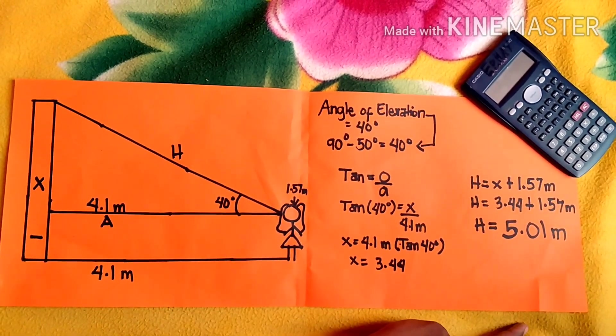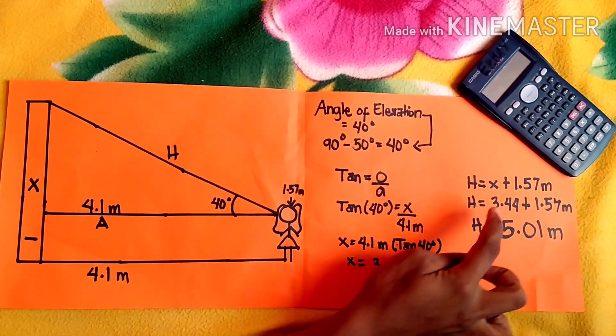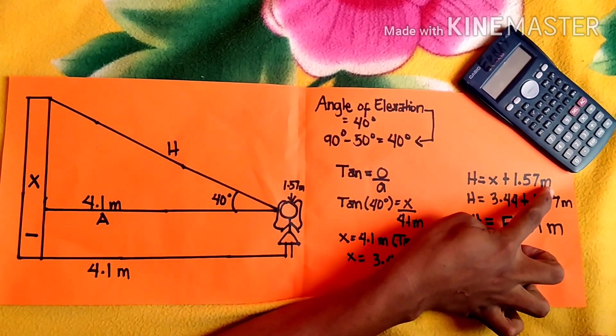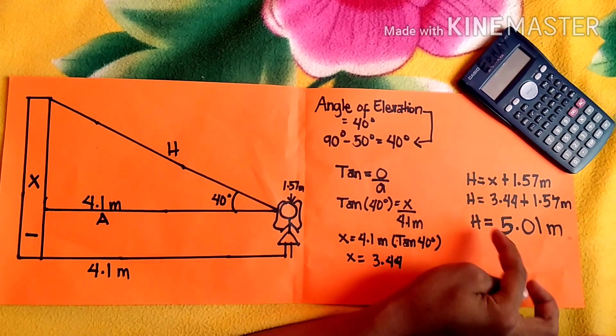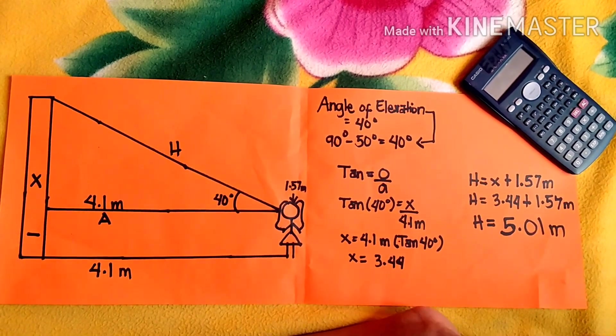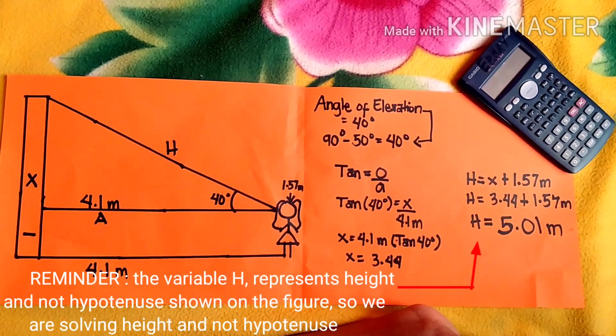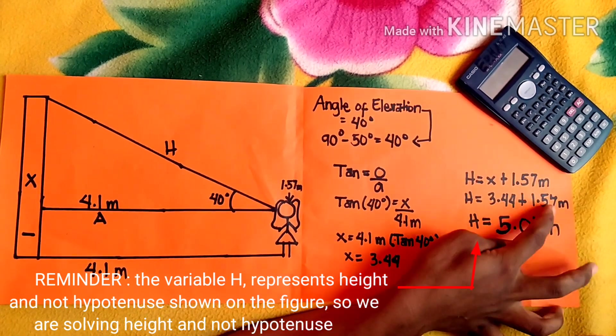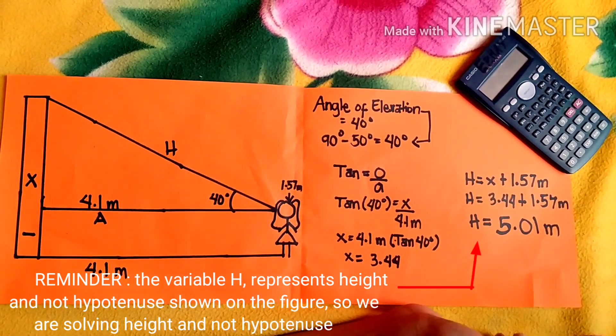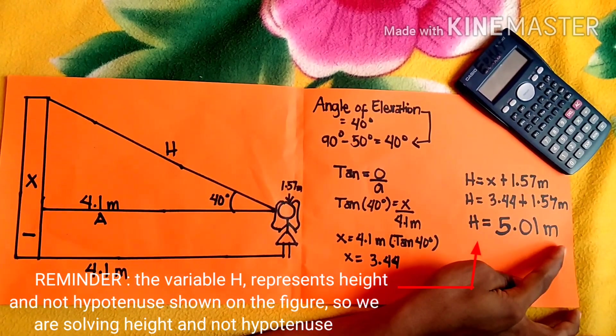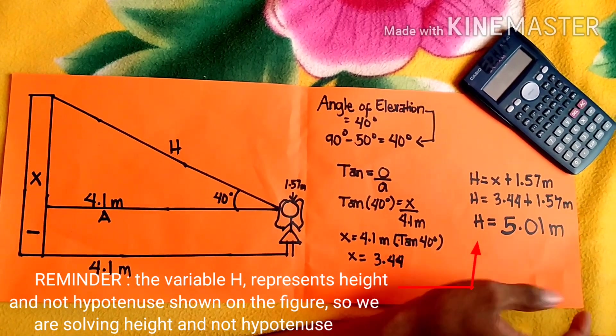Now let's find the height. H equals x plus 1.57 meters. X is 3.44 plus 1.57 meters. So we have a height of 5.01 meters, which is our final answer. Thank you!